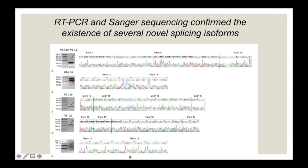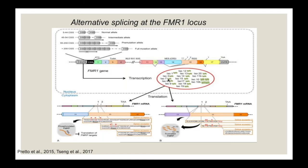We validated many of these novel isoforms — those missing multiple exons, just a couple, or the one retaining intron 9 — as bona fide transcripts. The FMR1 gene has 17 exons spanning about 34 kb of genomic DNA. The alternative splicing involves exons 12, 14, 15, and 17. The CGG repeat number determines the allele type. The gene structure also includes the nuclear export signal, the RGG box, and phosphorylation sites — all important for FMRP function.